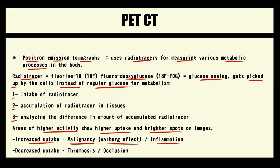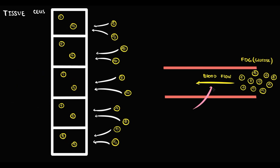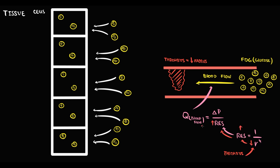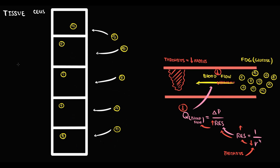PET-CT can also determine a decrease in glucose uptake caused by thrombosis or occlusion. Blood flow is directly proportional to the pressure difference and inversely proportional to resistance, and resistance is inversely proportional to the fourth power of the vessel radius. If thrombosis forms, the radius of the vessel decreases, causing resistance to increase and blood flow to decrease. With decreased blood flow, nutrient delivery decreases, so cells have less available glucose. Instead of two glucose molecules, cells can consume just one, and PET-CT shows low color intensity, indicating decreased metabolic activity in that region.